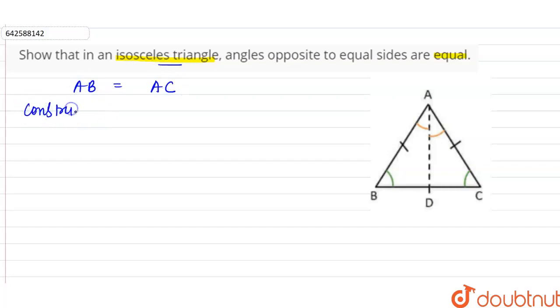Now in the construction, what we have to do, we have to draw AD bisector of angle A. So we can say, if this is the bisector of angle A, then angle 1 and angle 2 are equal to each other.